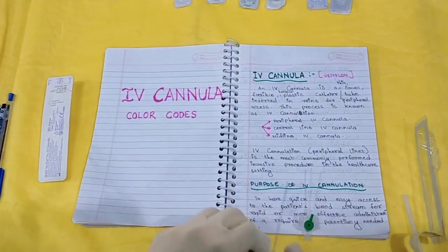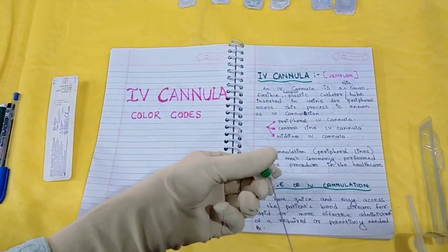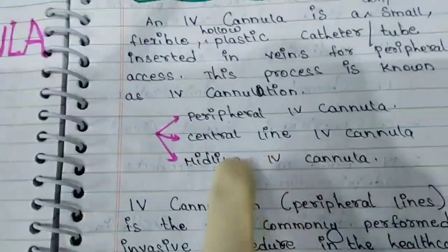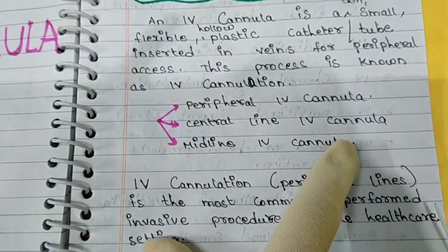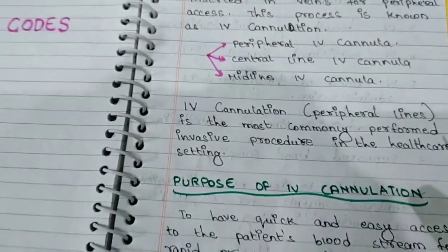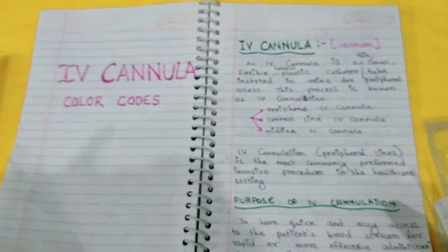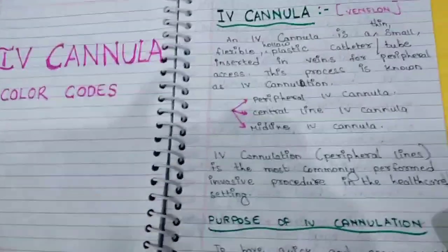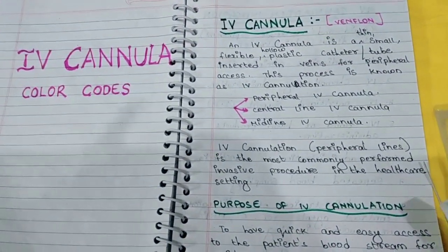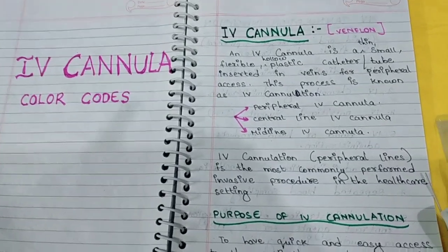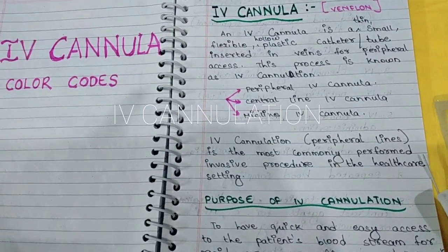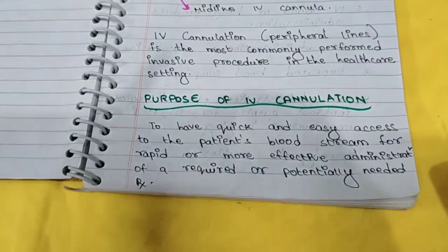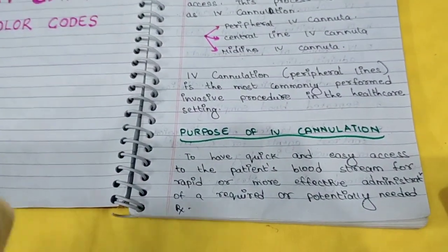These IV cannulas that are placed in veins are of three types: peripheral IV cannula, central line IV cannula, and midline IV cannula. The process of inserting the IV cannula is known as IV cannulation. IV cannulation is the most common invasive procedure performed in any healthcare setting. Now let us see what is the purpose of IV cannulation — why we are doing this most common procedure.